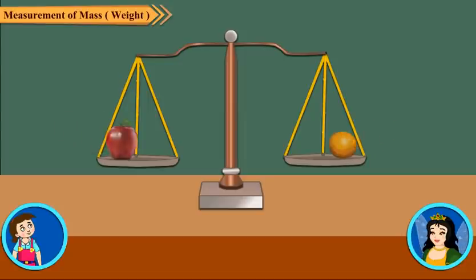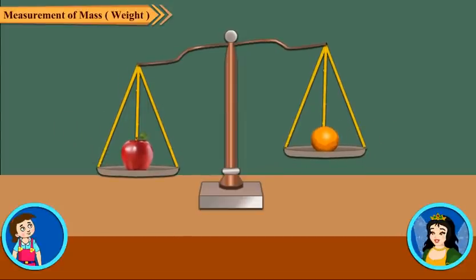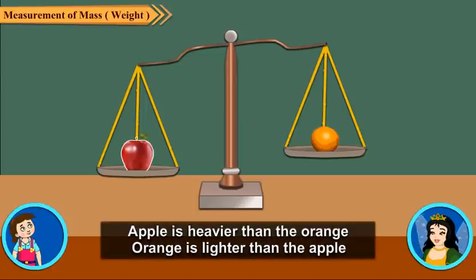Let us put the apple on one pan and orange on the other pan. We see now that the pan containing the apple goes down and the other pan goes up. This means the apple is heavier than the orange. The pan containing heavier objects goes down.